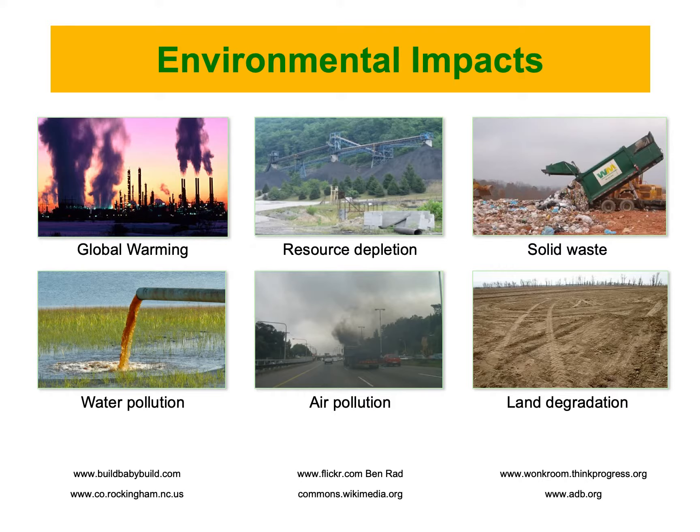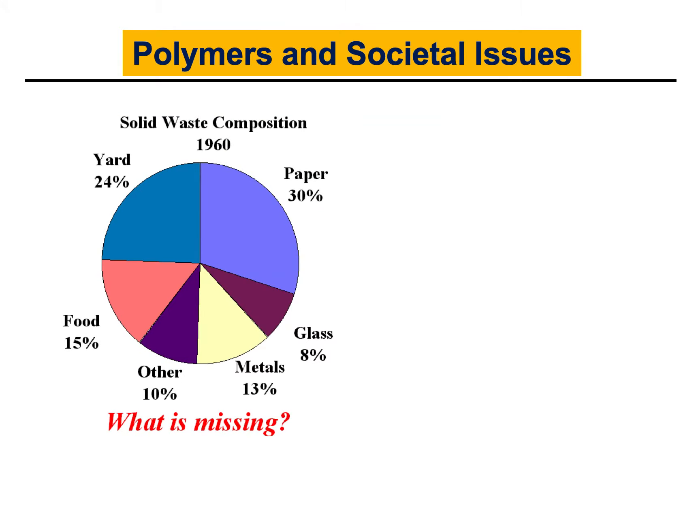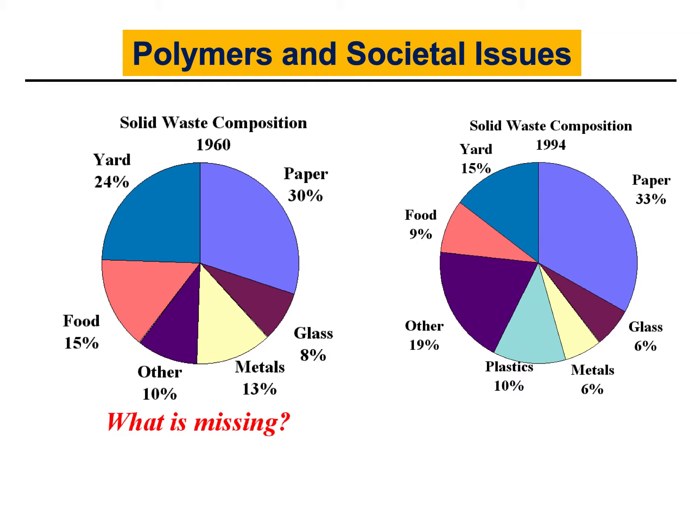From the material challenge perspective, looking at this chart, in 1960 these are the solid wastes produced — different materials including paper, glass, metal, and food. However, something very important is missing: a component that has been accumulating over the years since then, which is plastics. By 1994, plastics were already 10 percent of the solid waste composition, which is dangerous because plastics do not degrade easily into the environment.